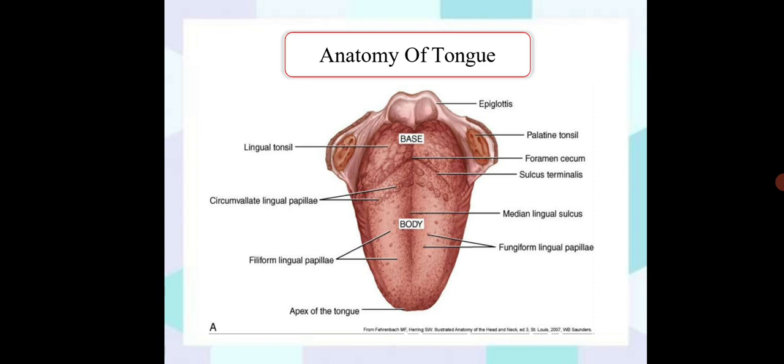Other than this base and body, you can see that the sulcus also, that is the sulcus terminalis. Other areas include the palatine tonsil, median lingual sulcus which divides the tongue in two parts, fungiform lingual papillae, and the apex of the tongue. Here the main function of body is to identify the different tastes.